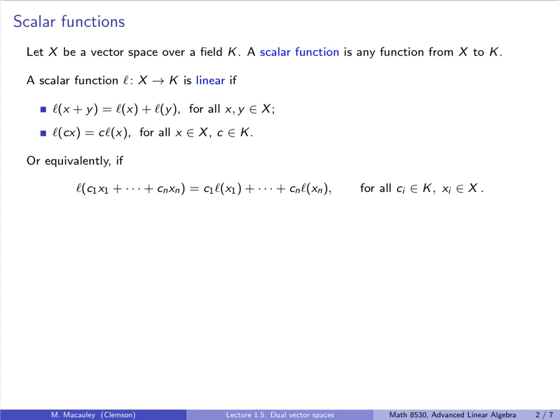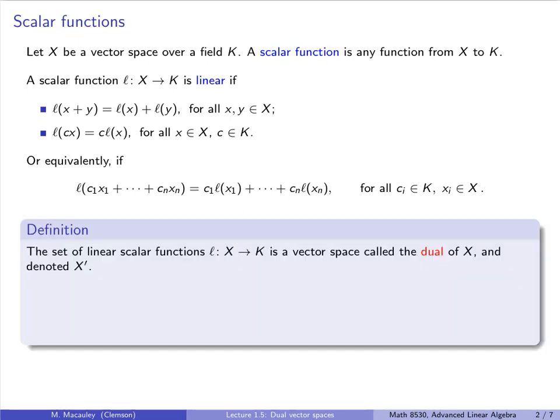Of course, we can more concisely write that in one condition, as L of a linear combination of the basis is just a linear combination of the image of the basis vectors. It is not hard to verify that the set of linear scalar functions is a vector space, and it's called the dual of X, denoted X prime.